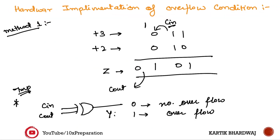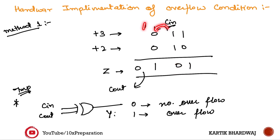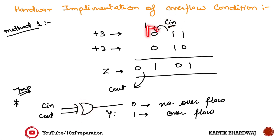Now for the hardware implementation: when adding two numbers, you can detect overflow by taking the XOR of Cin (carry into the MSB position) and Cout (carry out from the MSB position). Working through the addition — 1 plus 0 is 1, 1 plus 1 gives carry, 1 plus 0 plus 0 is 1 — we check the carry into and out of the most significant bit. XORing these two carry signals gives the overflow indicator.